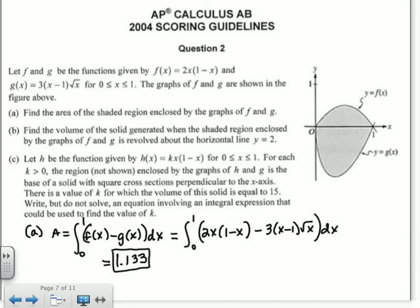Okay, Part B says, find the volume of the solid generated when the shaded region enclosed by the graphs of f and g is revolved around the horizontal line y equals 2. All right, so y equals 2 is up here, because here's y equals 1, so it's up at the top. Okay, so I always think if I'm going around y equals 2, that looks like the x-axis. It's horizontal.